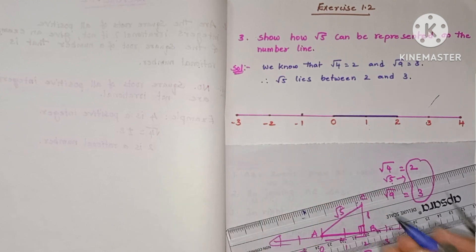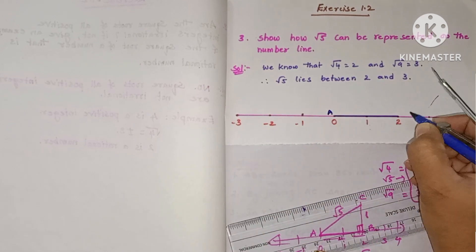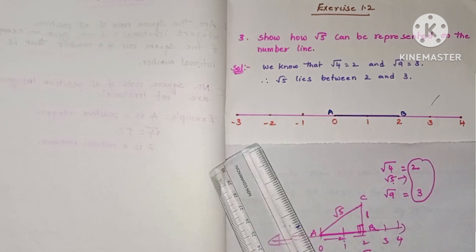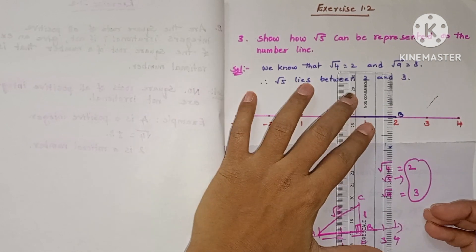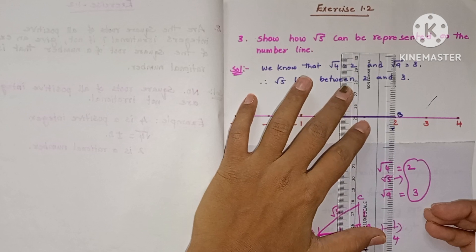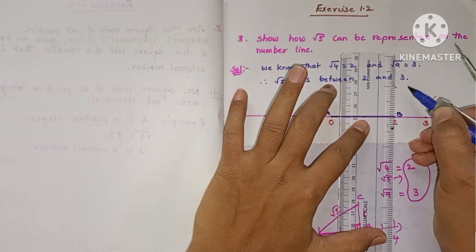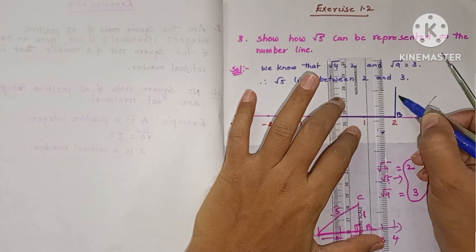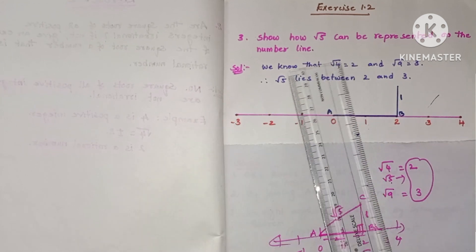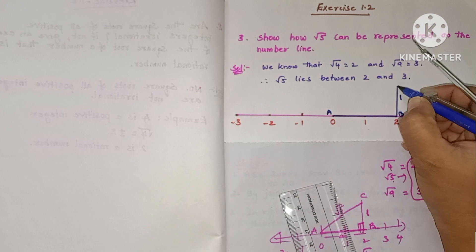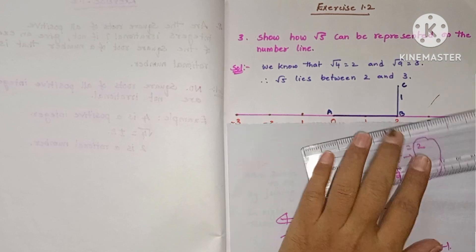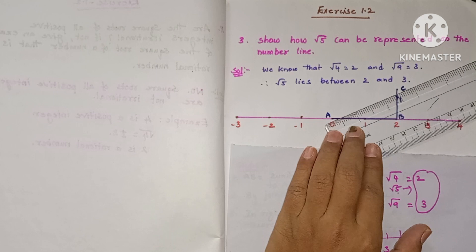On the number line, take equal distances of 1 unit each. AB equals two units. Now draw a perpendicular at B — BC equals one unit. Then join A and C.